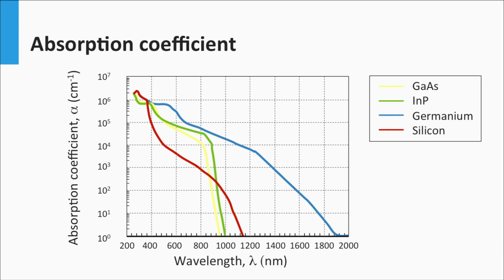Germanium, indicated by the blue line, is like silicon — an indirect band gap material. It has a band gap of 0.67 eV, which means it starts to absorb light at wavelengths below 850 nm. In the visible part, germanium has some direct transitions as well.